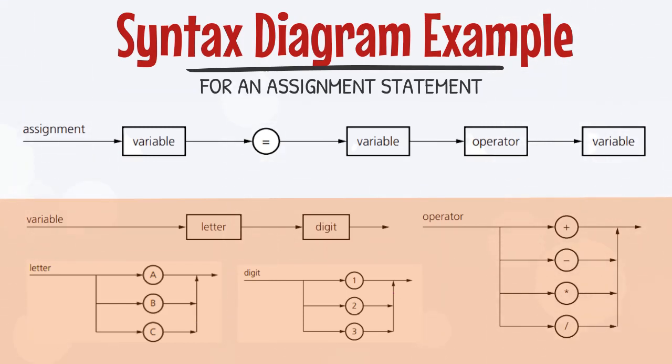According to these syntax diagrams, a variable can be assigned a value by first writing variable at left hand side, then equal to sign must be written. After equal to sign, variable is written, followed by an operator, and ended with another variable.